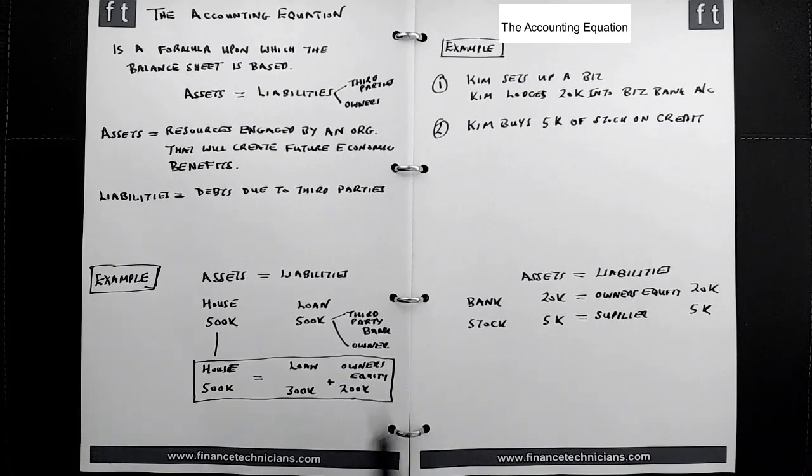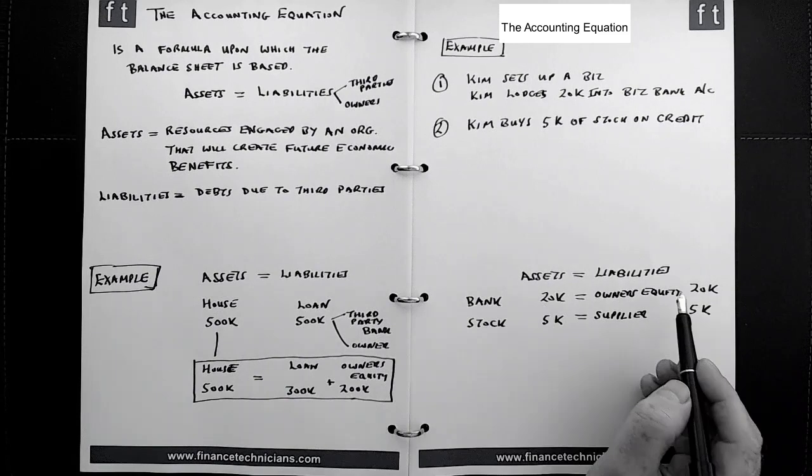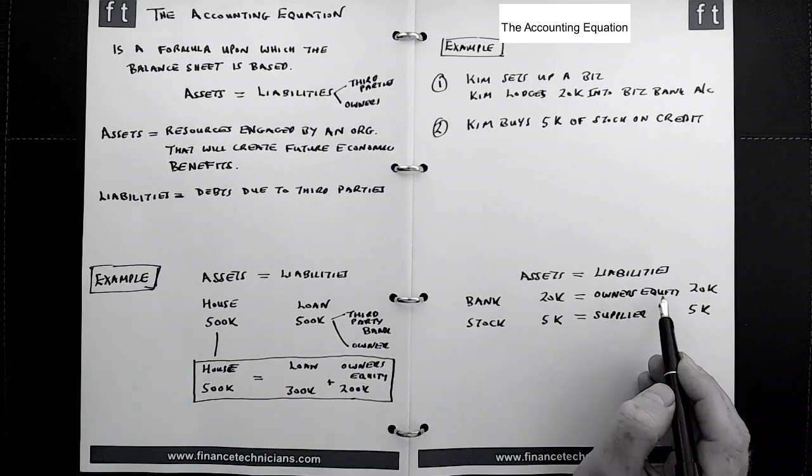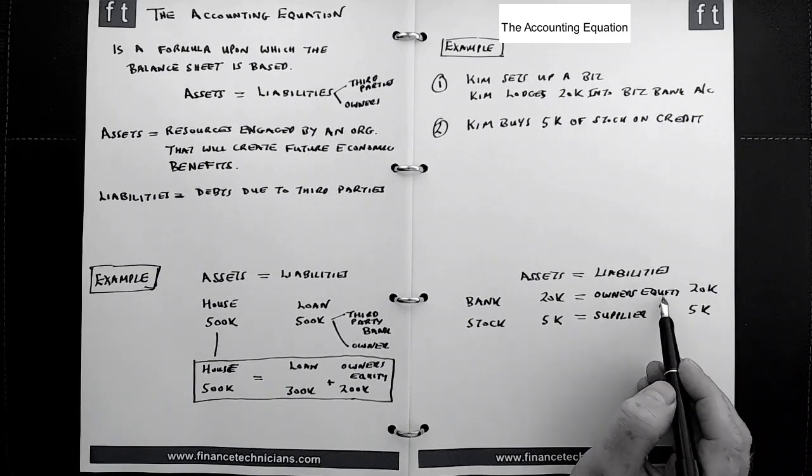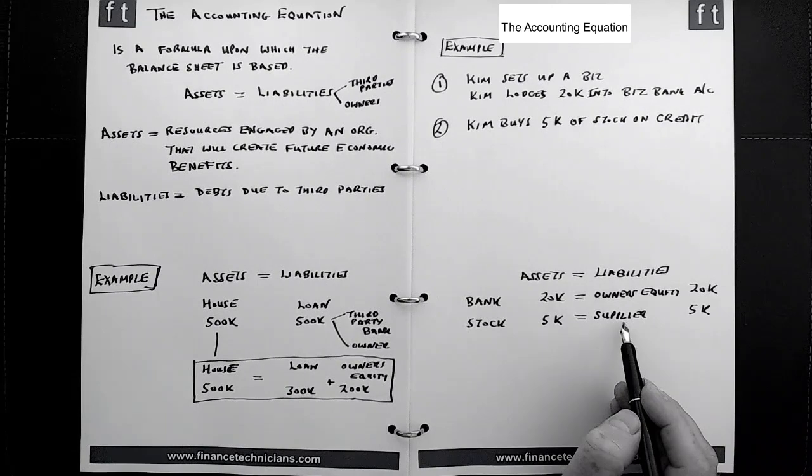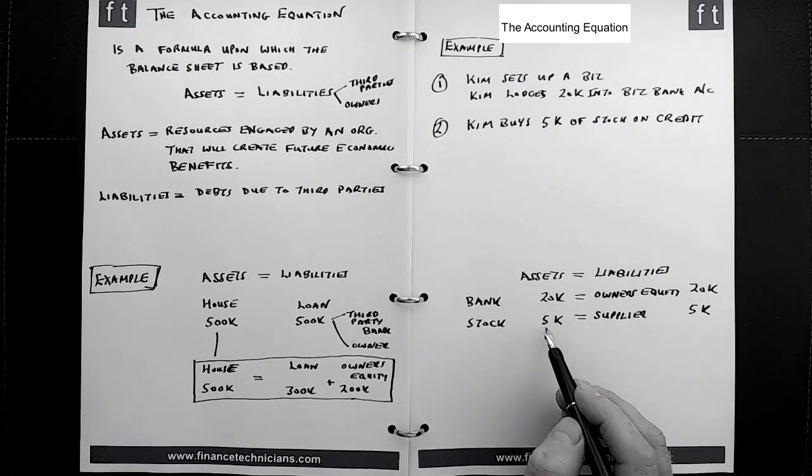Based on this, we have 25k worth of assets and 25k worth of liabilities. And in this simple example, it's quite obvious that the claim on the monies in the bank is from Kim, who's the owner, because Kim put the monies in. The claim on the stock is from the supplier because the supplier has given the stock to Kim on credit for a period of time.